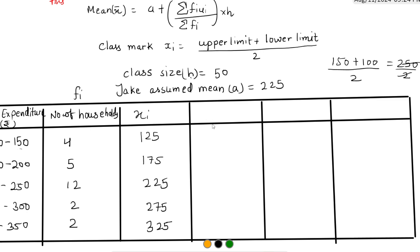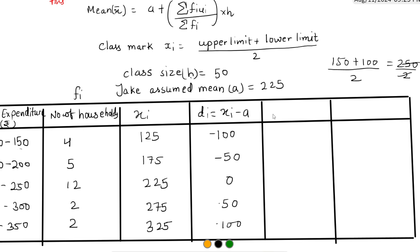The next column is deviation Di, which is Xi minus A. Di = Xi − A, where A = 225. So: 125 − 225 = −100, 175 − 225 = −50, 225 − 225 = 0, 275 − 225 = 50, 325 − 225 = 100.